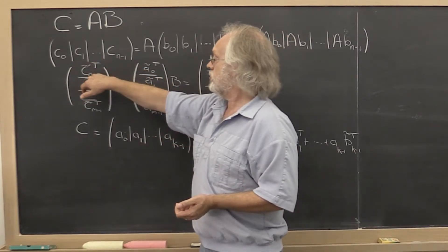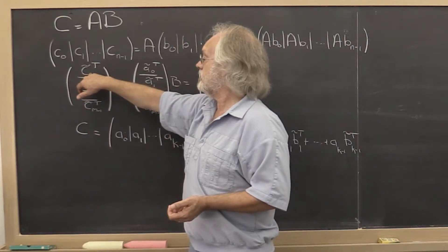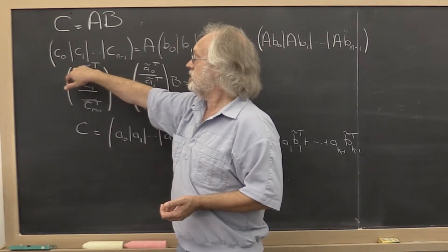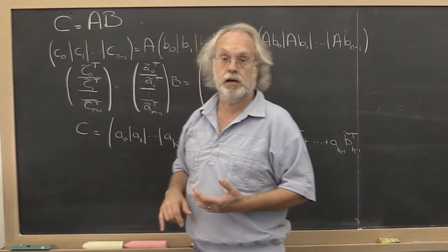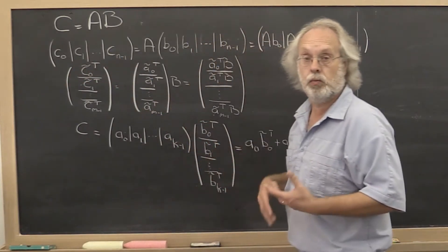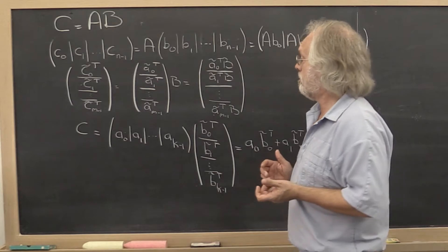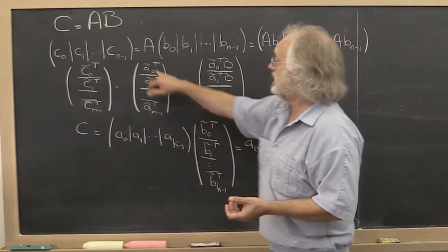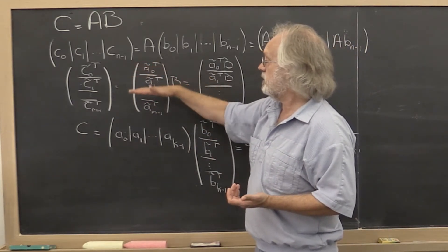And because we don't want to confuse the C sub 0 here with the C sub 0 here, we additionally put a little tilde on there because in this particular case otherwise things could get confusing. All right. We can do the same thing with A. Partition it by rows.